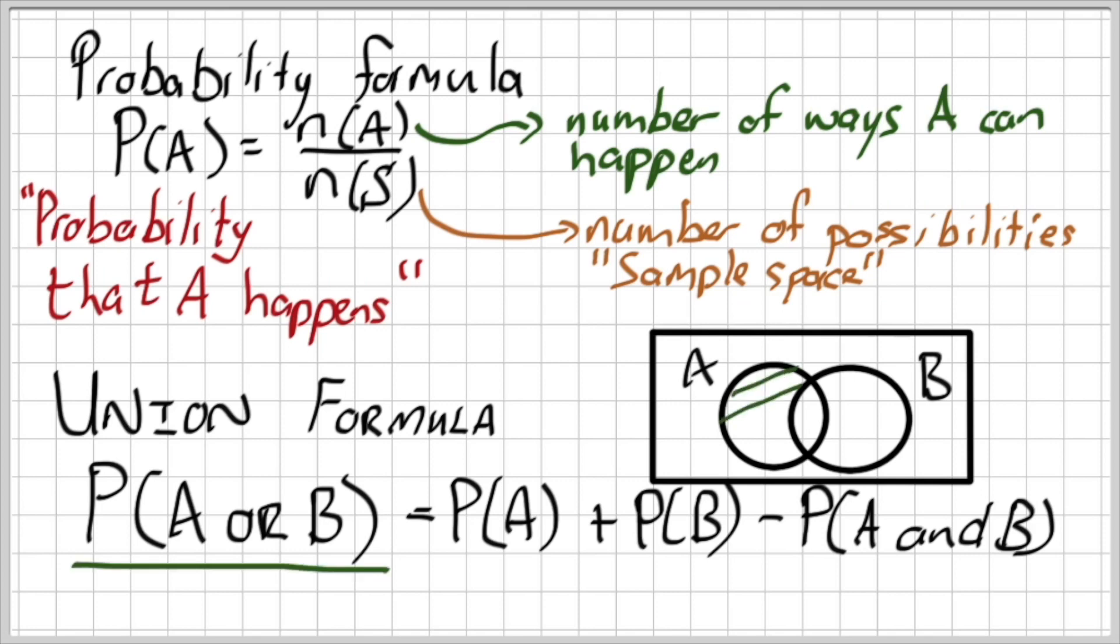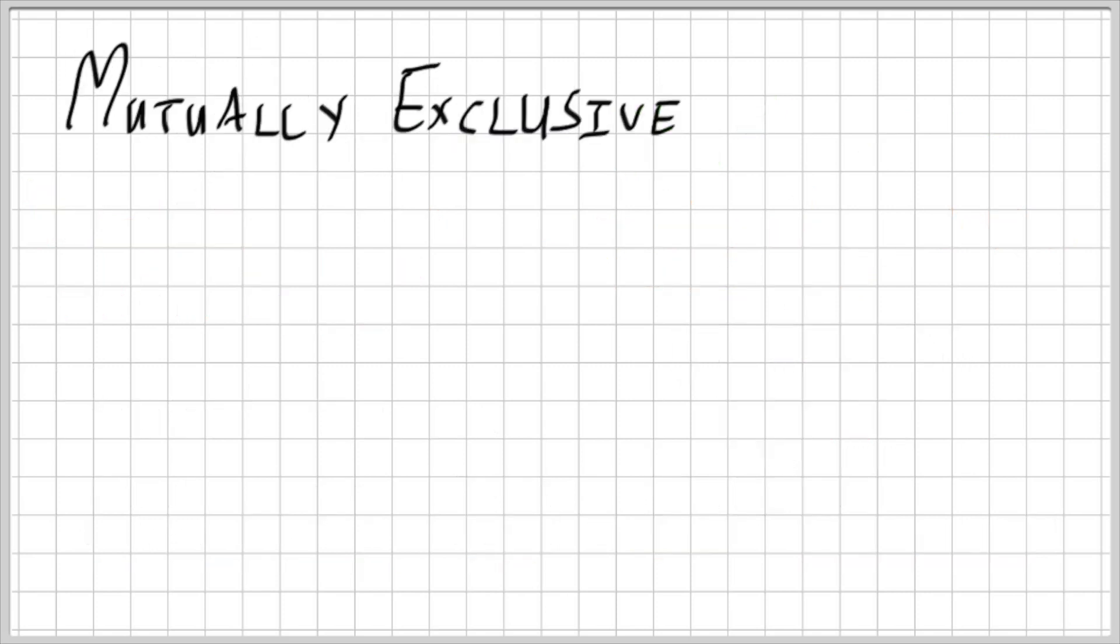I'm going to color in the probability of A or B. So that just means that it's going to lie either in A or in B or maybe even in both. So that is the green colored in part. Now what is the probability of A? That is the orange colored in part. If I add the probability of B, that is now the red colored in part. Do you see that there's a little part there in the middle that has been colored in twice? That is the probability of A and B. That's why we have to remove it because we colored it in twice. But that's where the formula comes from, ladies and gentlemen.